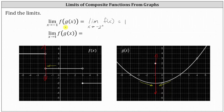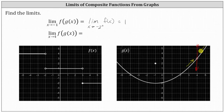Now let's look at the second example. We have the limit as x approaches four of f of g of x. We first determine the limit as x approaches four of g of x. Here's x equals four. We approach from the left side and the right side, and notice we're approaching the y value or function value of positive three.